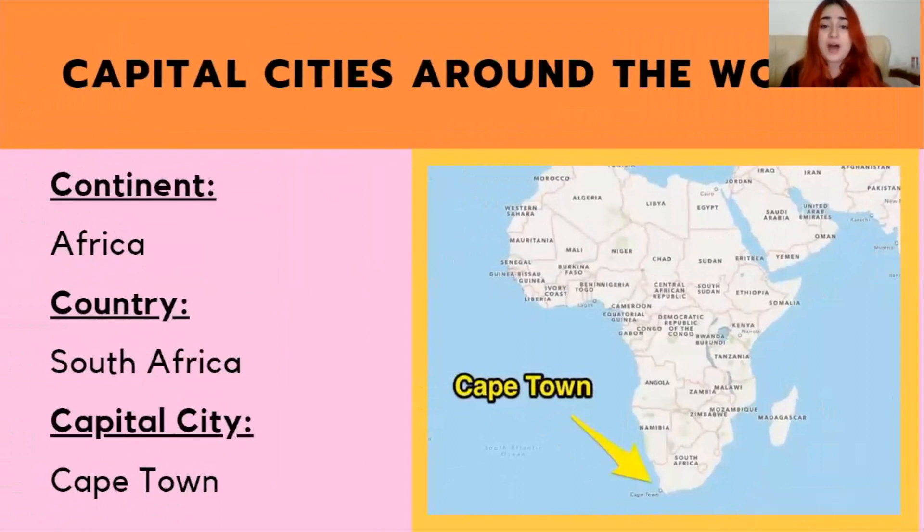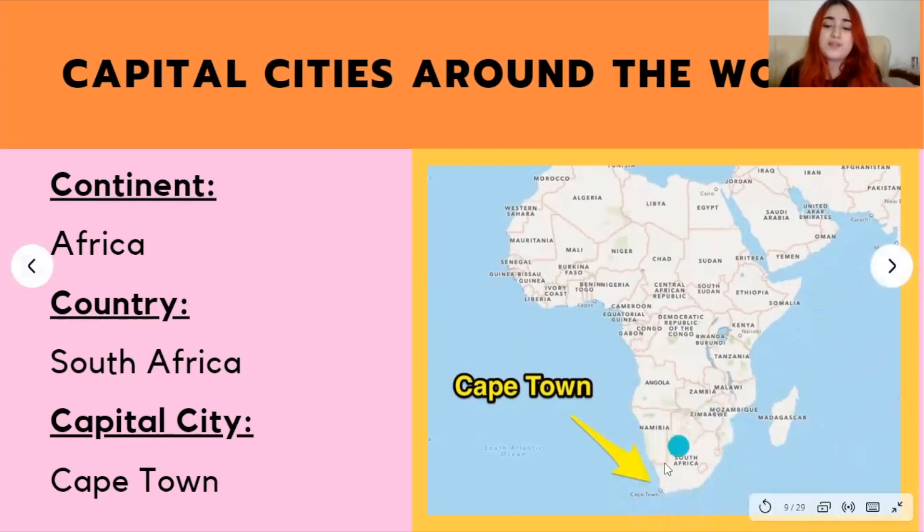Next up, we have Cape Town, located in South Africa in the African continent, marked right at the bottom of this map.